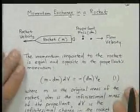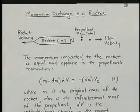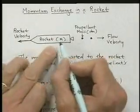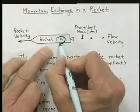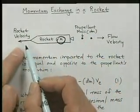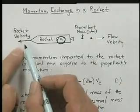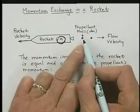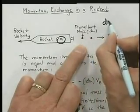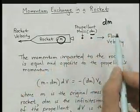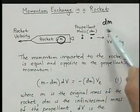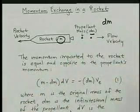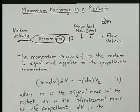So that leads us to this basic concept of a momentum exchange in a rocket. So we'll assume that we have this rocket with a mass m, and it has some velocity, could start out at zero, could be at any initial velocity. And then we eject propellant mass, dm, I wrote it rather small here. So here's an infinitesimal bit of propellant, you can think of it as little points here, coming out with some flow velocity.